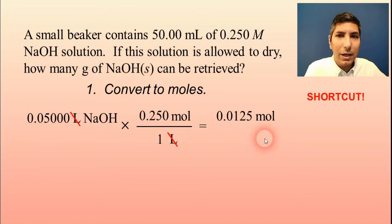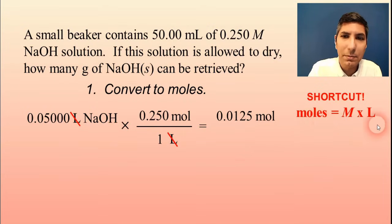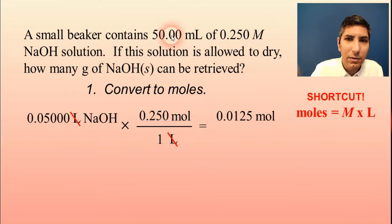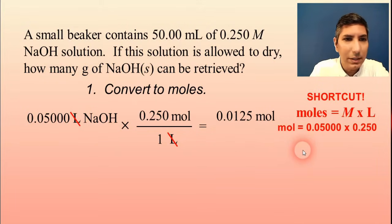There is a shortcut here. And I'm bringing this up because we're going to be doing a lot of this type of calculation once we get into acid-base titrations and solution chemistry later on. Molarity times liters equals moles. I'm not sure how much of a shortcut that is. But if you remember that, and you just take the molarity times liters, that's a very quick way to get the moles. You know, just take the 0.05 times 0.25, and you'll get the same answer, which is essentially what we did. But you just need to remember that. Moles equals molarity times liters.